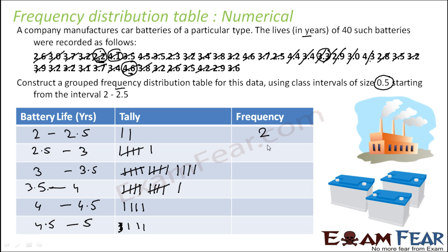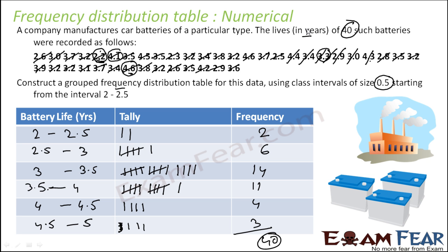Looking at the frequency values: 2 to 2.5 has 2, 2.5 to 3 has 6, 3 to 3.5 has 14, 3.5 to 4 has 11, 4 to 4.5 has 4, and 4.5 to 5 has 3. Adding these: 2 + 6 + 14 + 11 + 4 + 3 = 40, which matches the total number of batteries. So we are correct.